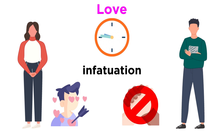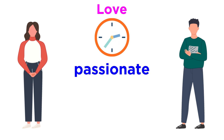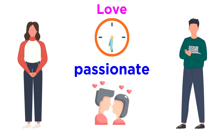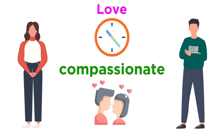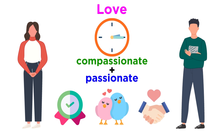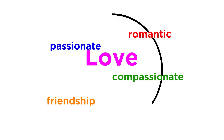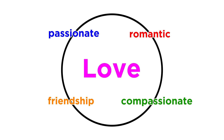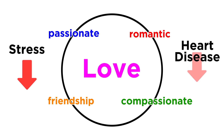As the relationship develops, infatuation may develop into passionate love, which is love characterized by a need to be physically close, often with sexual attraction, or compassionate love, which is love marked by trust, affection, and commitment, or both. All of these types of love and relationships are important, and can even have health benefits like lower stress levels and lower risk of heart disease.